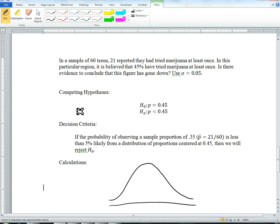Let's look at an example that involves a one sample hypothesis test regarding population proportions instead of mu. It works very similarly.